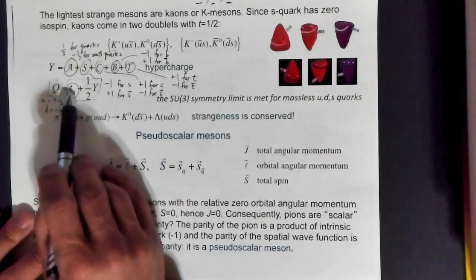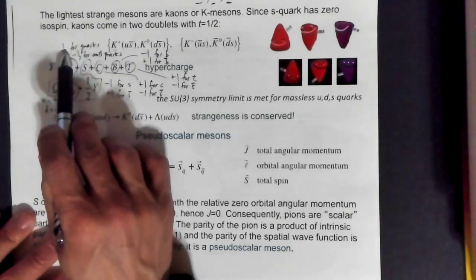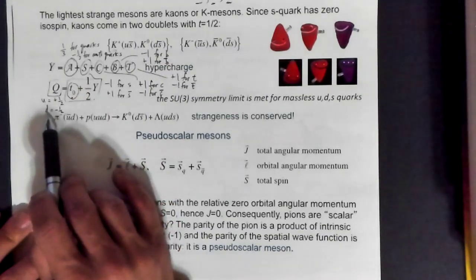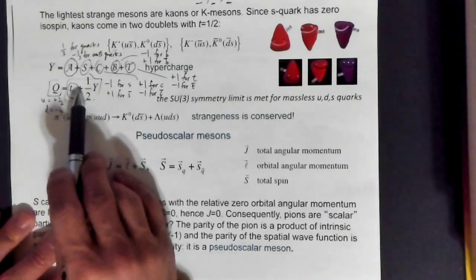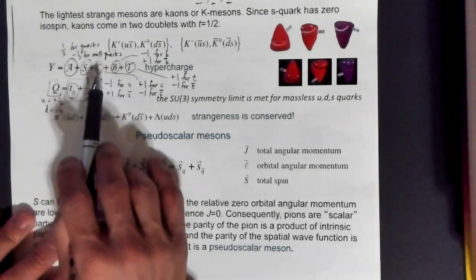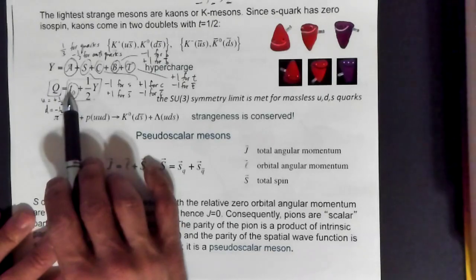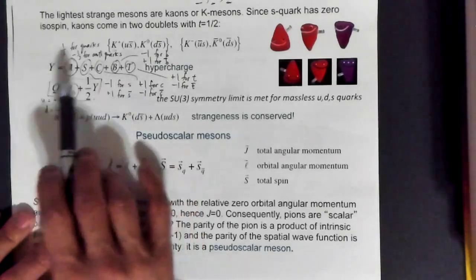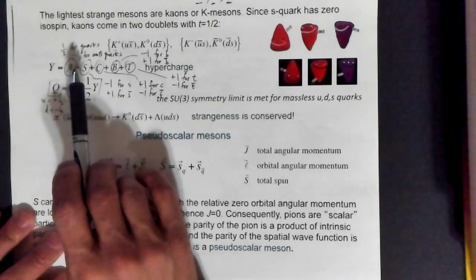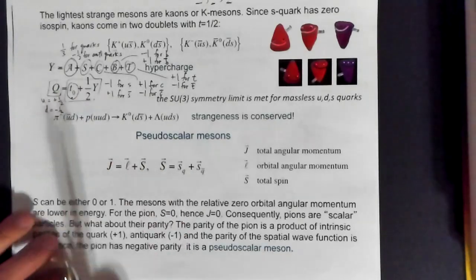You can check this: for the up quark, T₃ = +1/2 and hypercharge = 1/3, so charge = 1/2 + (1/2)(1/3) = 1/2 + 1/6 = 2/3. For the down quark, you get -1/2 + 1/6 = -1/3. For the charm quark, T₃ = 0 and hypercharge = 1/3 from the charm contribution, so you add those together divided by two and end up getting 2/3.